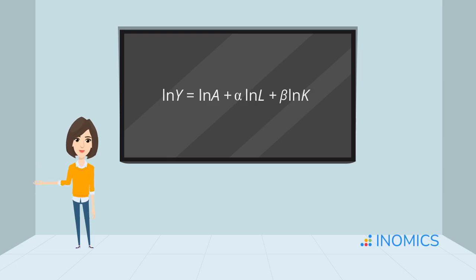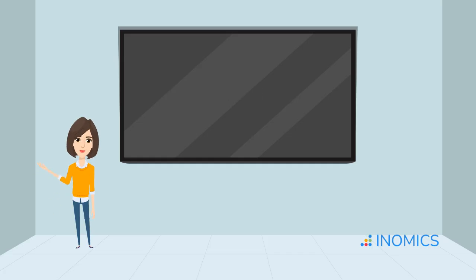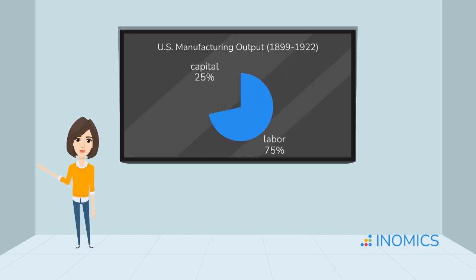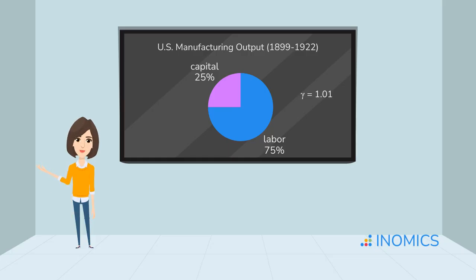This is incredibly useful because it lets us estimate alpha and beta empirically using regression analysis. Using U.S. data from 1899 to 1922, Cobb and Douglas estimated that alpha = 0.75 and beta = 0.25. That means labor contributed about three quarters of U.S. manufacturing output, and capital the remaining quarter. They also found a technology parameter gamma = 1.01, slightly greater than 1, reflecting unobserved technological progress boosting production efficiency over time.